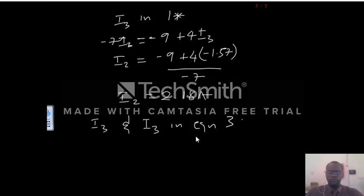And then for us to get I1, we have found I3 and I2, so for us to get the value of I1, all we have to do is substitute for I2 and I3 in equation 3 for us to get the value of I1.